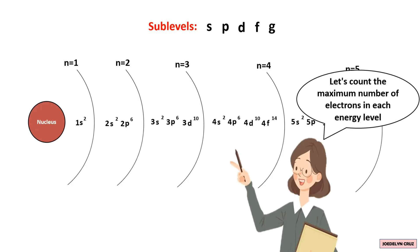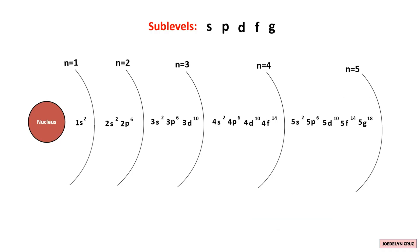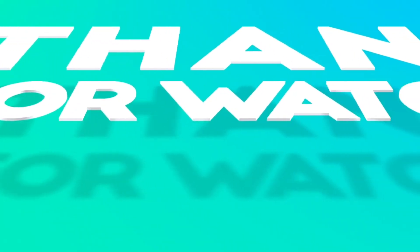Now, let us count the maximum number of electrons in each energy level. In the first energy level, there can be a maximum of 2 electrons. In the second energy level, the maximum is 2 + 6 = 8 electrons. Moving on to the third energy level, the maximum is 2 + 6 + 10 = 18 electrons. For the fourth energy level, it is 2 + 6 + 10 + 14 = 32 electrons. Finally, in the fifth energy level, the maximum is 2 + 6 + 10 + 14 + 18 = 50 electrons. This is what the sublevels and the number of electrons look like in each energy level.